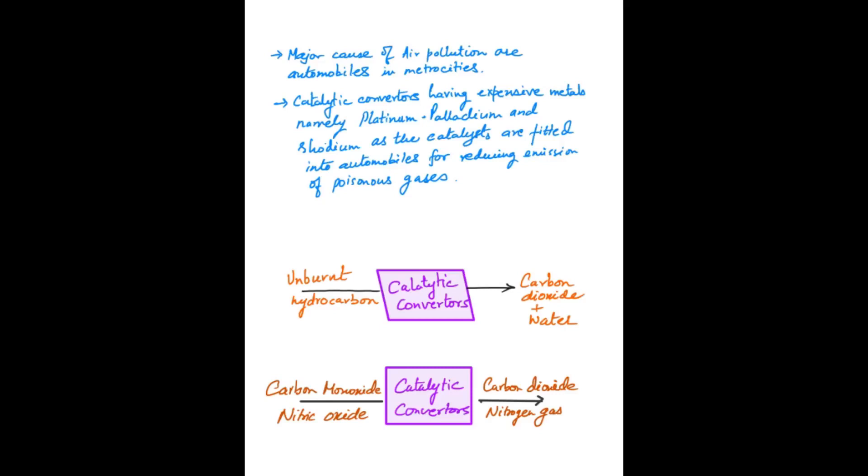In catalytic converters, many expensive metals are used in the engines like platinum, palladium, and rhodium. These metals are fitted in automobiles for removing poisonous gases. Once catalytic converter is there, it will change unburnt hydrocarbon to harmless carbon dioxide and water. Similarly, carbon monoxide and nitric oxide gases are converted to carbon dioxide and nitrogen gas respectively using catalytic converter.